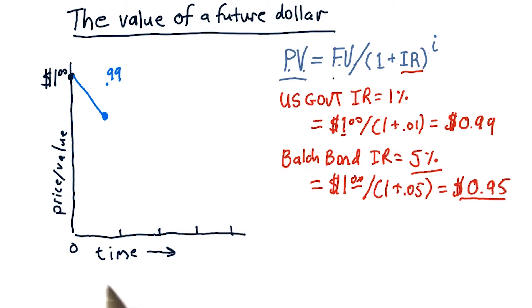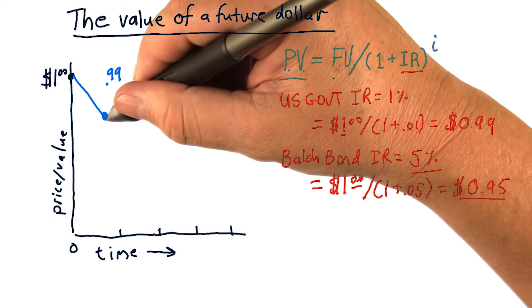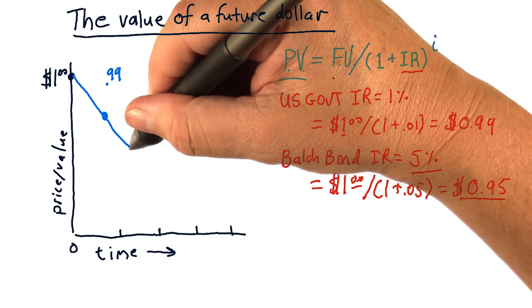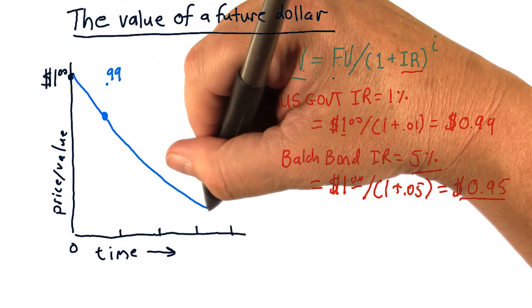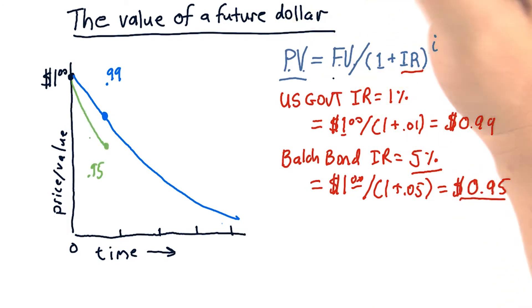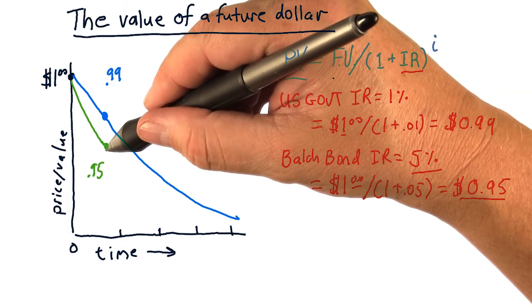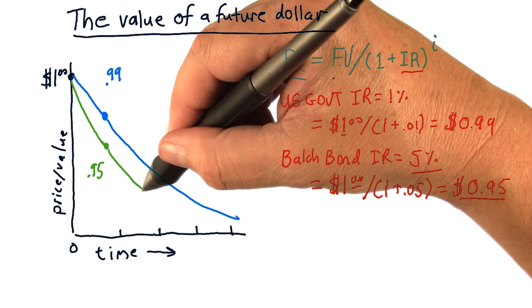But what if we talk about promising you that dollar in the future? If we look at this for the U.S. bond, in one year we see it's worth 99 cents. If we carry that forward, it's sort of this exponentially decreasing value like that. If you look at the Balch bond, which is, of course, not as worthwhile as the U.S. government, you see one that decreases at an even faster rate.